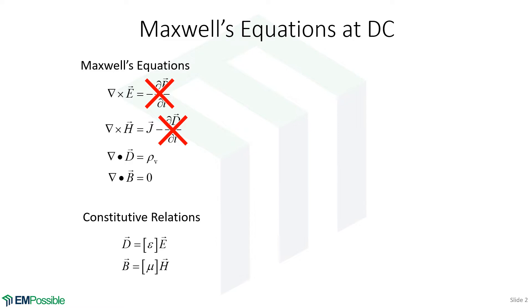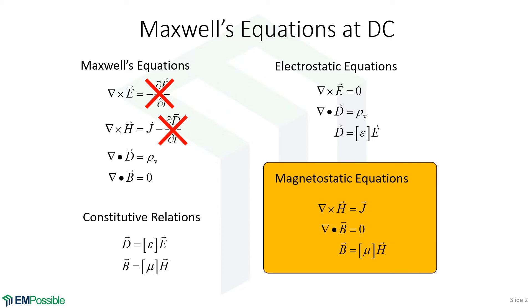Now, if we examine what's left over of Maxwell's equations for long enough, we'll realize that they've actually separated into two independent sets of equations. This first set describes all of electrostatics. Well, the second set describes all of magnetostatics, and this is going to be the focus of the next series of lectures in this course.